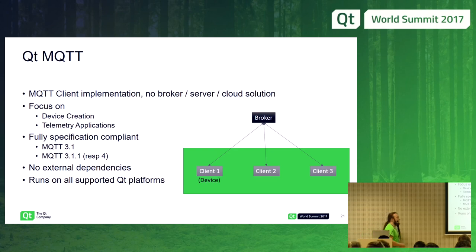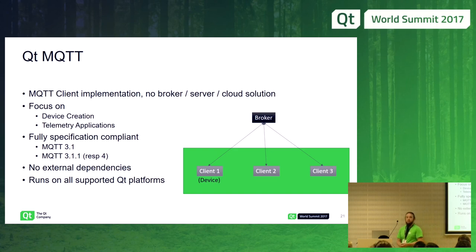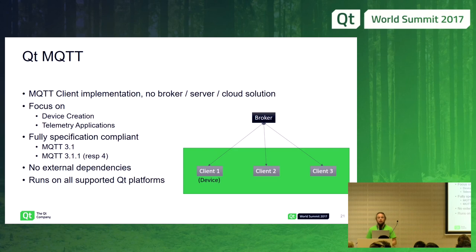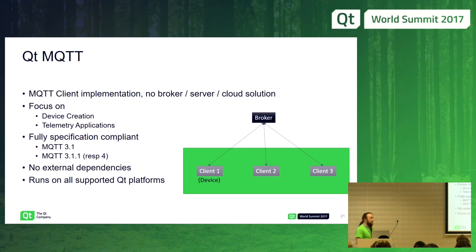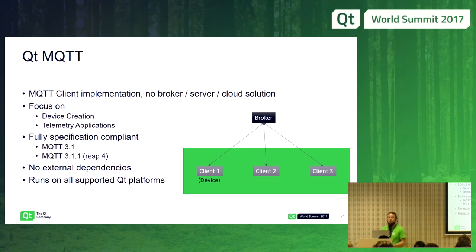One thing noteworthy is that we do not use any external dependencies — it's completely implemented in Qt. We're not using PAHO, which many implementations and bindings are based on. When you get Qt MQTT, you get a full implementation in Qt with no external dependencies being dragged in. That also has the advantage that it runs on all supported Qt platforms — anything where Qt runs, you can also use Qt MQTT.